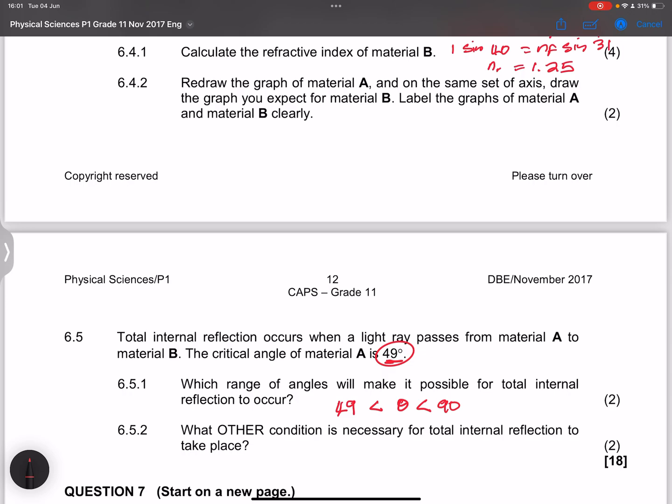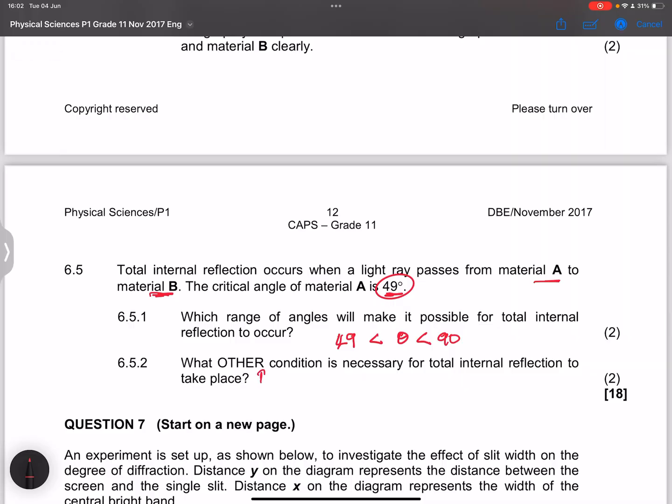And now they ask us what other condition is necessary for total internal refraction to take place. So we note in this case now, note that we're using material A and material B. So which means that the refractive index for material A must be greater than